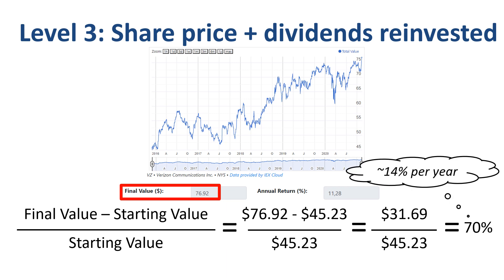This 14% straight-line gain is different from the output of the online tool, which shows 11%. That's because the tool is calculating on the more accurate basis of compound growth. If you grow $45 by 11% in year one, then grow 11% on top of that in year two, and another 11% in year three, and so on, you get to $77 on an exponential curve.